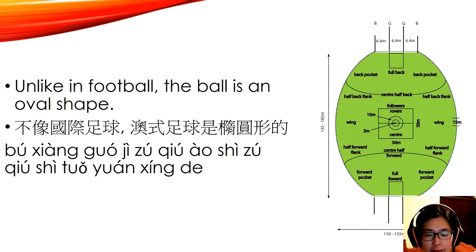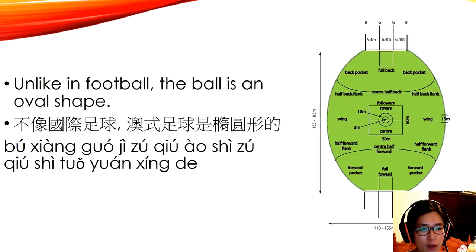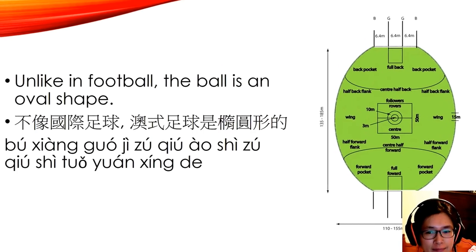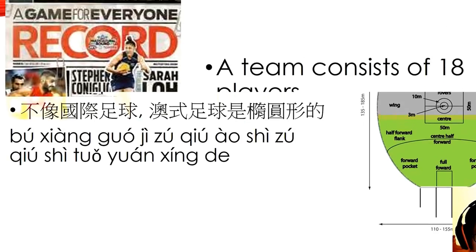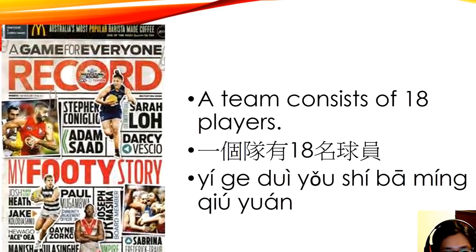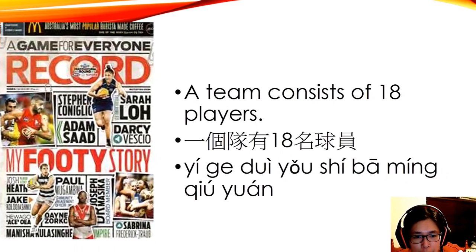Unlike in international football, the ball is an oval shape. 不像国际足球，澳式足球是椭圆形的。 A team consists of eighteen players. 一个队有十八名球员。